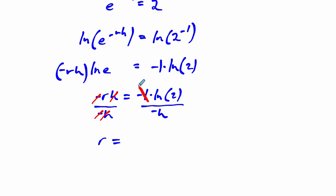On the right-hand side of the equation, the negatives cancel out, and what we're left with is the natural log of 2 over h. So it turns out, if you're given the half-life of any substance, that the decay rate r is always equal to the natural log of 2 divided by the half-life that you're given in time.